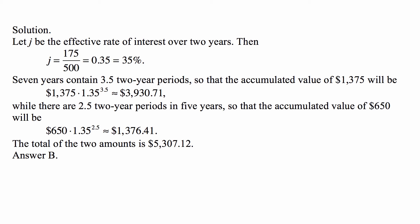Seven years contains 3.5 two-year periods, so that the accumulated value of $1,375 accumulated over seven years will be $1,375 times 1.35 to the power of 3.5, or approximately $3,930.71.